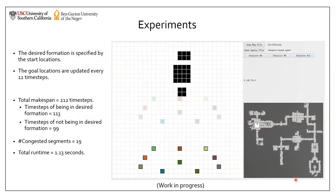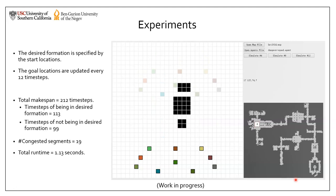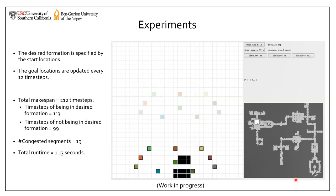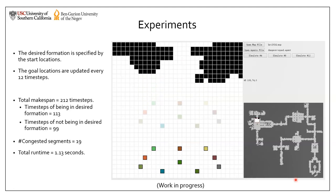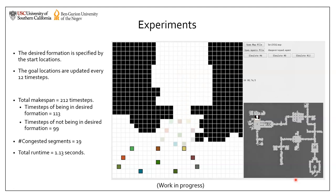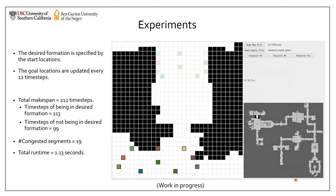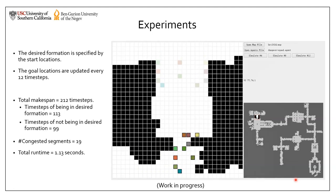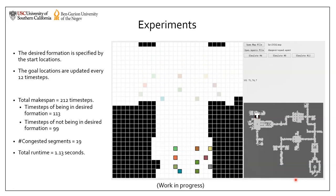We demonstrate our algorithm in a simulated game environment. The agents are initially in their desired formation. We assume that there is a player who updates the goal locations every 12 time steps. We simulate for 212 time steps. And among these time steps, the agents are staying in their desired formation for 113 time steps.